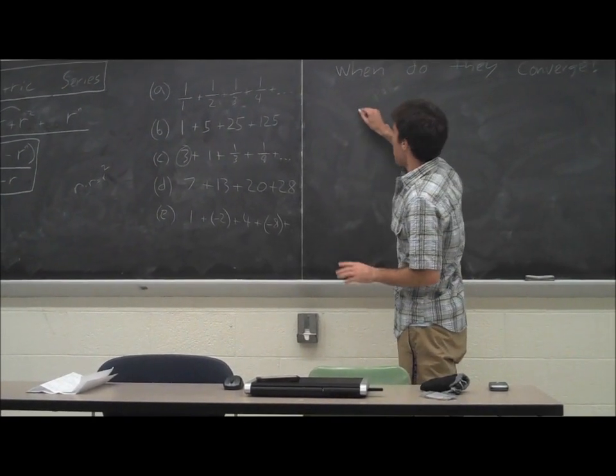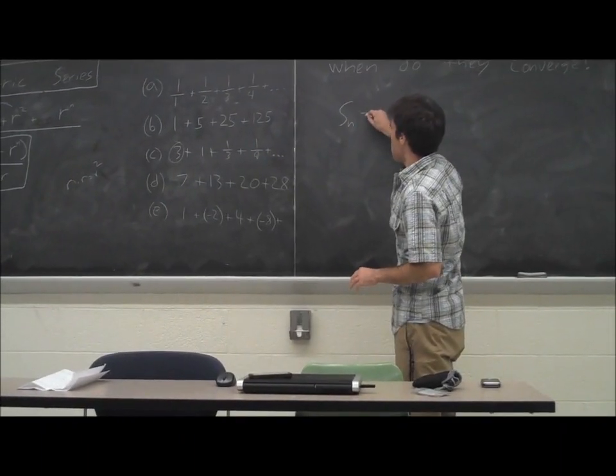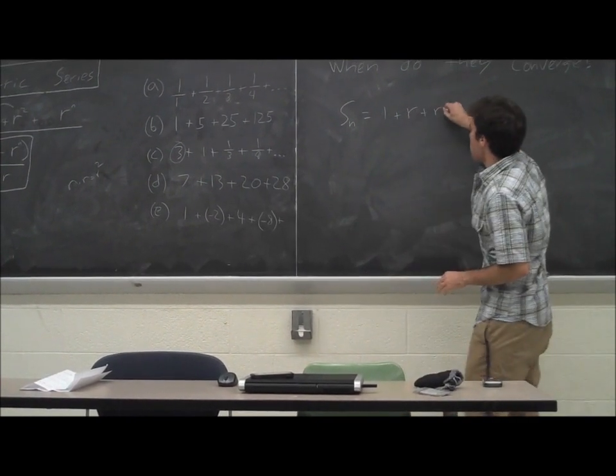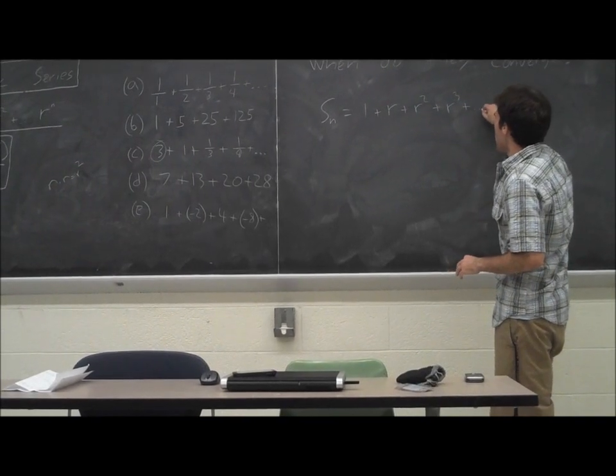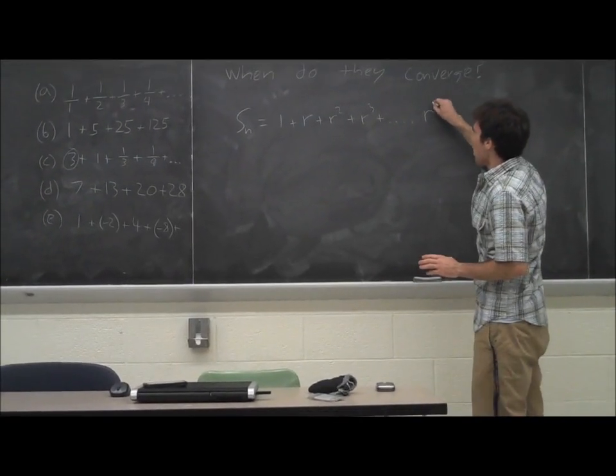And the way we're going to look at it is we're going to look at two series that are very similar but slightly different and combine them to get that sum. So if we look at our first series, let's just write the sum of our geometric series is 1 plus R, let's include a few more terms so you can see the pattern, plus R squared, dot dot dot, R to the n. Okay.